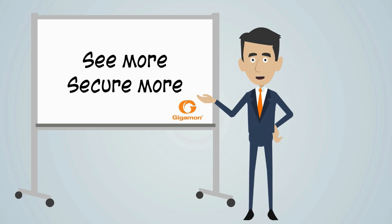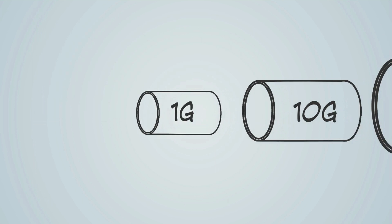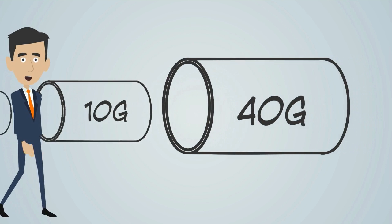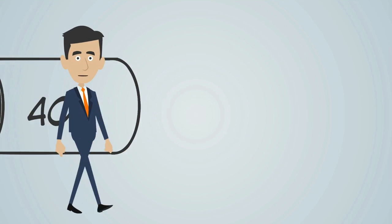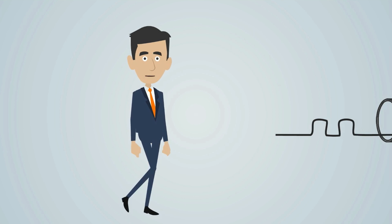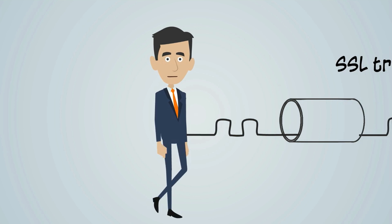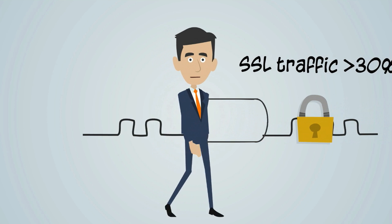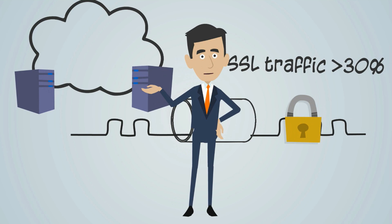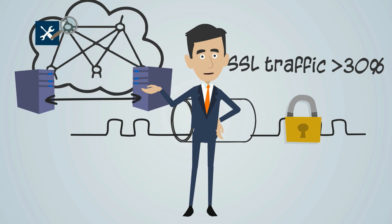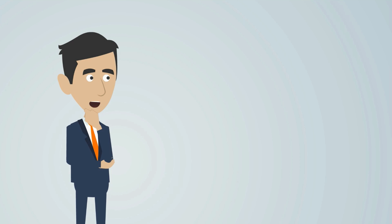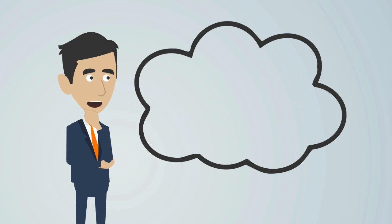IT security has always had to adapt to new challenges. Today's security systems have to analyze vast amounts of network and traffic data. Traffic is increasingly flowing east to west within virtualized networks and is often SSL encrypted, which leads to more and more traffic going unseen by traditional protection systems, which are concentrated at the perimeter. And on top of that, we need to accommodate the trend towards software-defined IT infrastructures.